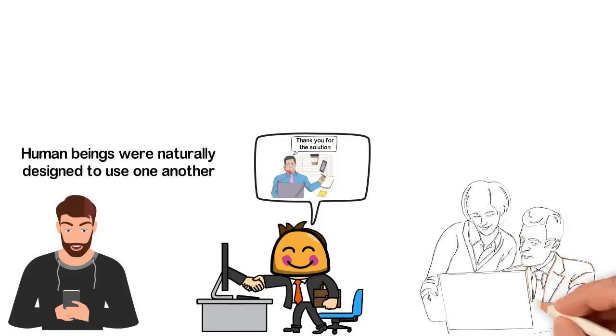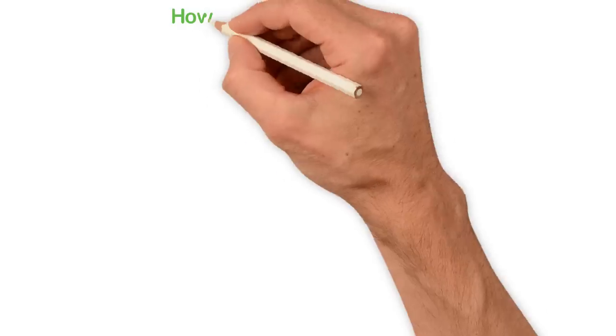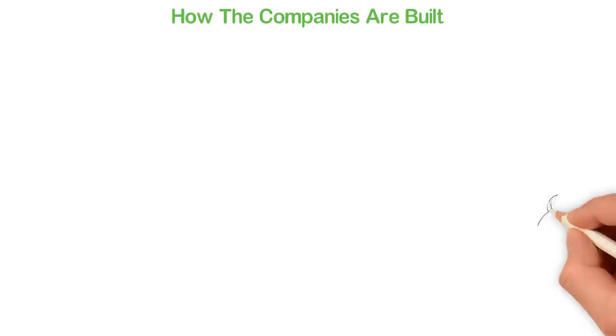Those who know how to use other humans are those who get whatever they want: the resources to start a business, the support for their movement, the dedication of thousands to fight for a cause. How the companies are built. To see how all of these work, let me start by showing you the obvious examples.